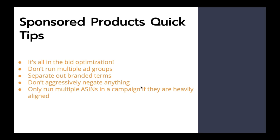Only run multiple ASINs in a campaign if they're heavily aligned. People start auto campaigns with 20 products that are all completely different — they may all be kitchen products but not that aligned. You can't control the budget so it's not a great strategy. We typically run product grouping — if they're a parent-child, we often put them into a campaign until we figure out who the winner is, then pull the winner out and start campaigns just for the winner. Ideally it's one ASIN per campaign per ad group, but sometimes with parent-child it doesn't hurt to put them together because the consumer is driven to the listing with all products anyway.